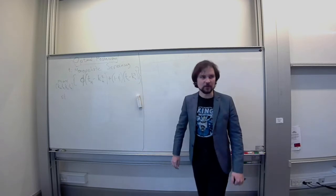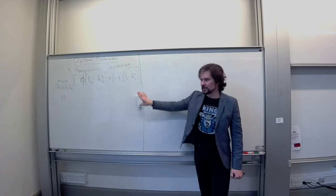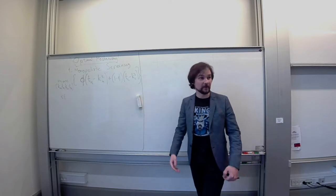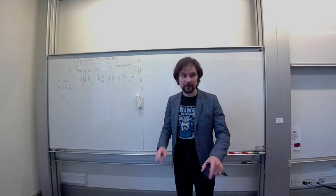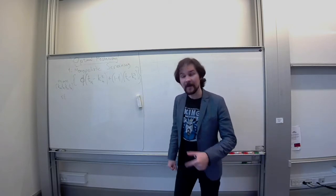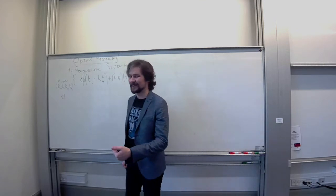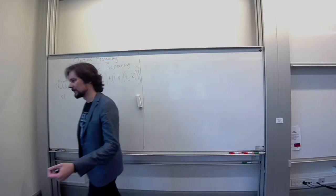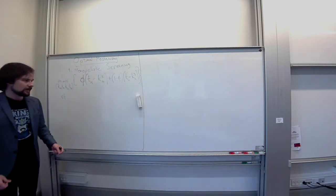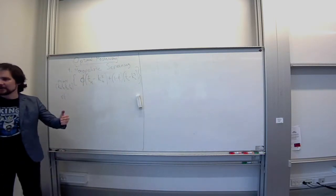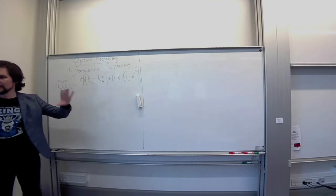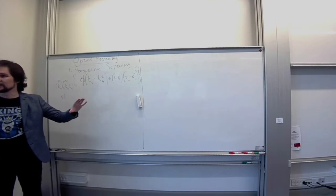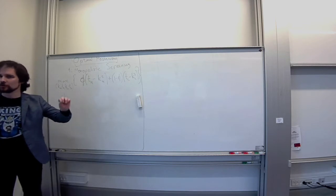Then we had some constraints. We originally had four constraints. Two incentive compatibility conditions for the two types of the buyer. And then we had two individual rationality conditions. Once again, for two different types of the buyer willing to participate in the mechanism. And finally, what we did last time around is we took these four inequality constraints and we simplified them to two equality constraints.